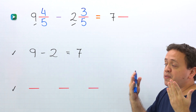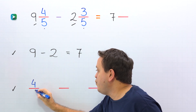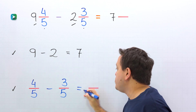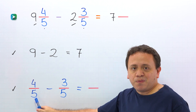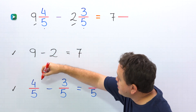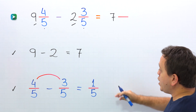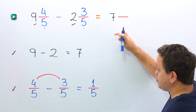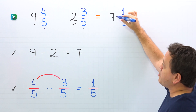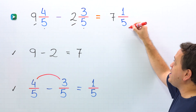It's time to find the difference of the fractions. The fractions are four-fifths and three-fifths in this case. So we put four-fifths minus three-fifths. These two fractions have the same denominator — five on the left, five on the right, five on this side. Next, we subtract the numerators, and four minus three gives us one. Finally, we add the difference of the fractions to the difference of the whole numbers. So we put one-fifth next to seven, and nine and four-fifths minus two and three-fifths gives us seven and one-fifth.